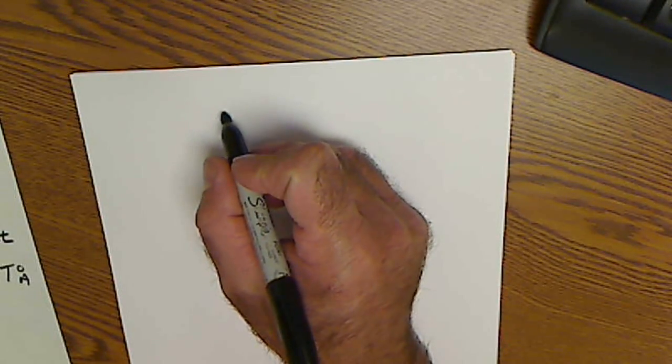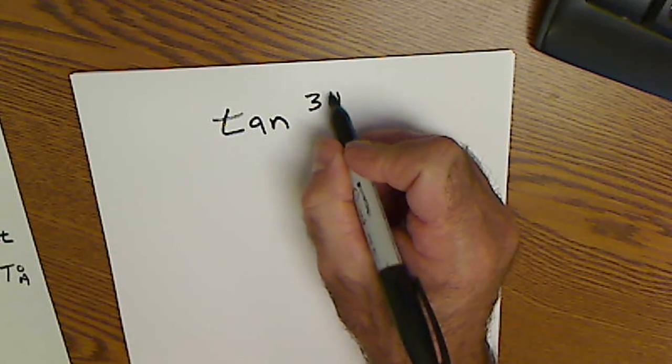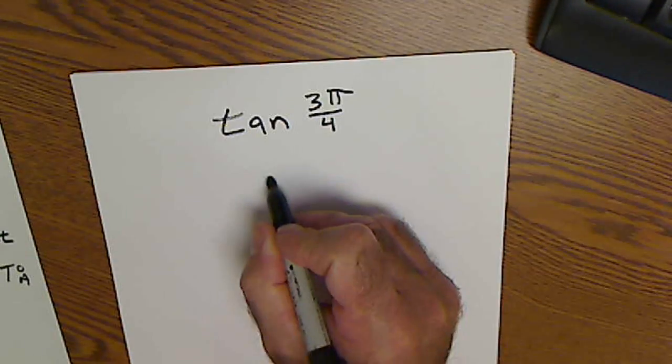So take a look at another one. Let's take the tangent of 3 pi over 4. Same thing, draw my angle, 3 quarters of the way to pi.